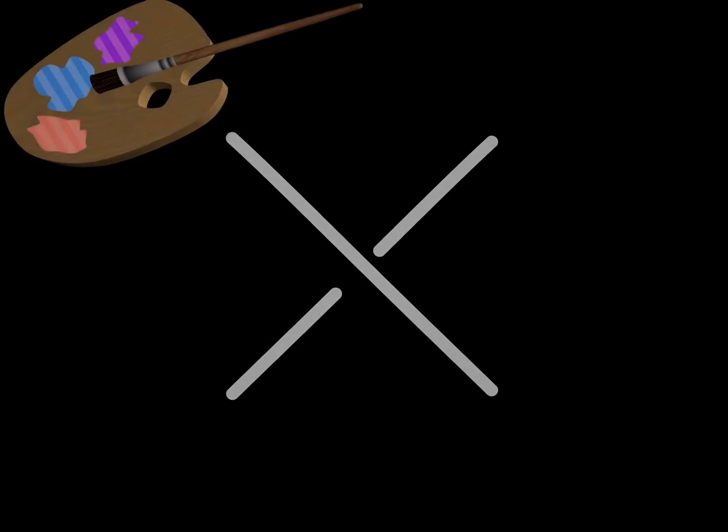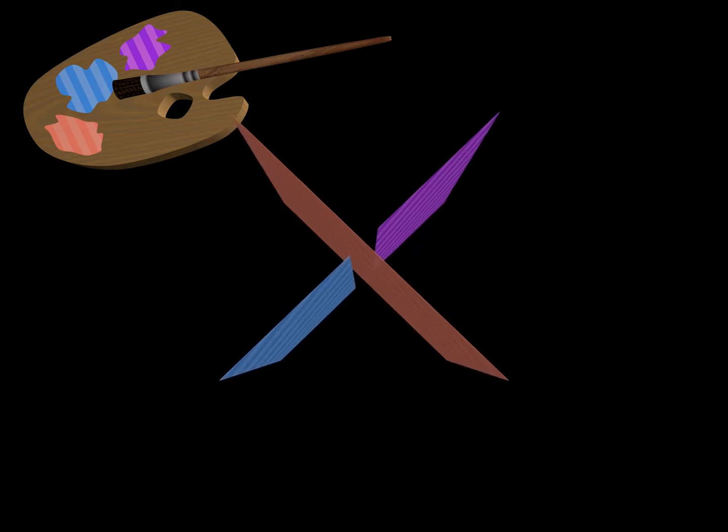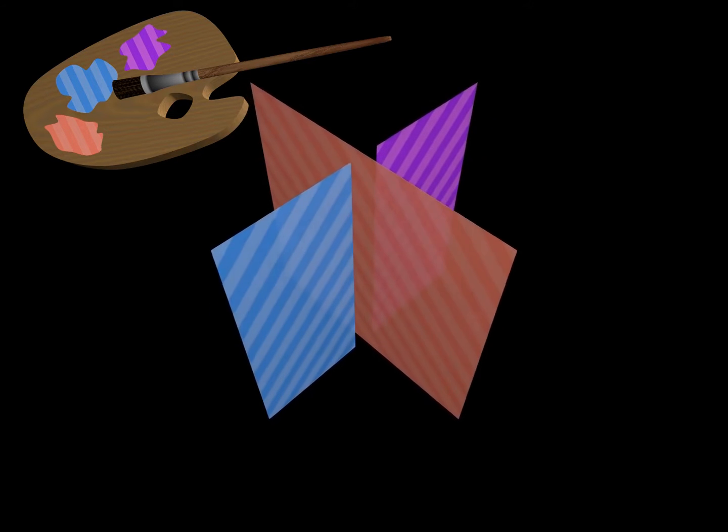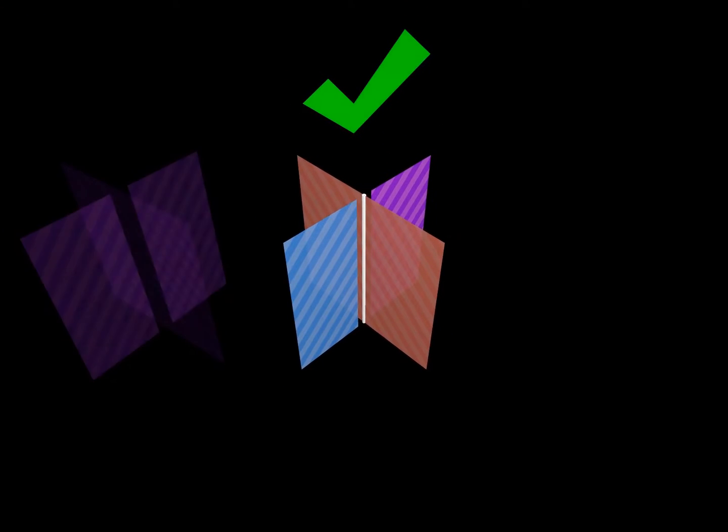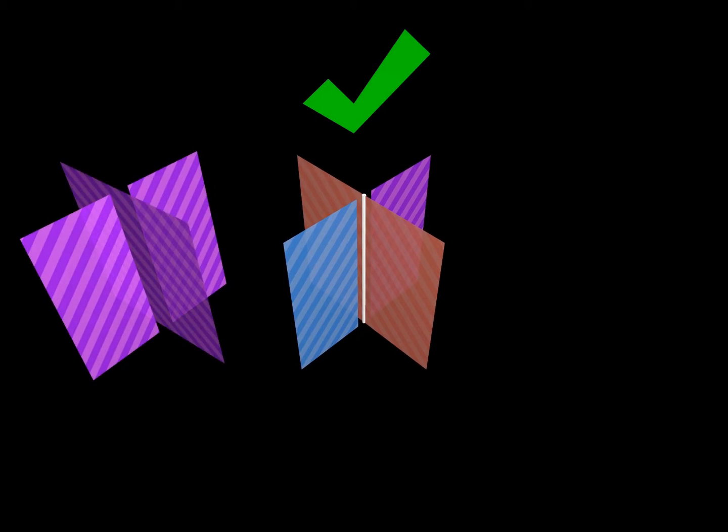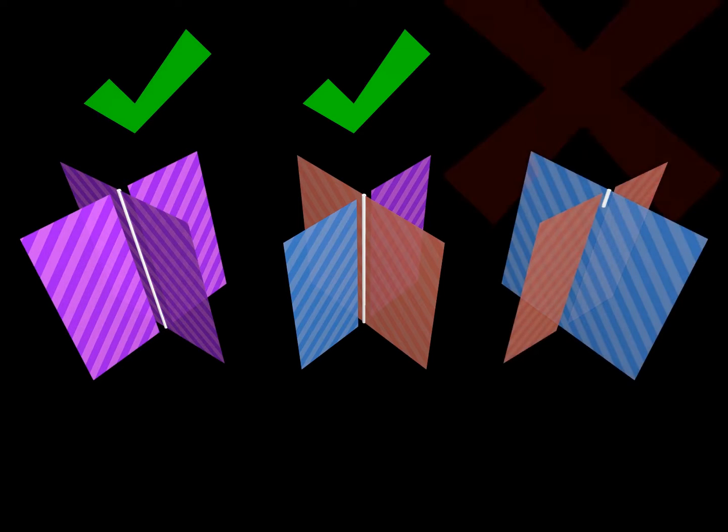Recall the rule to three color knot diagrams. We color arcs such that at this crossing we see all three colors or just one color. This rule can be translated almost literally to broken surface diagrams. We color the pieces of the surface such that at each line of double points we see all the three colors. The forbidden situation is when we have exactly two colors around the line of double points.